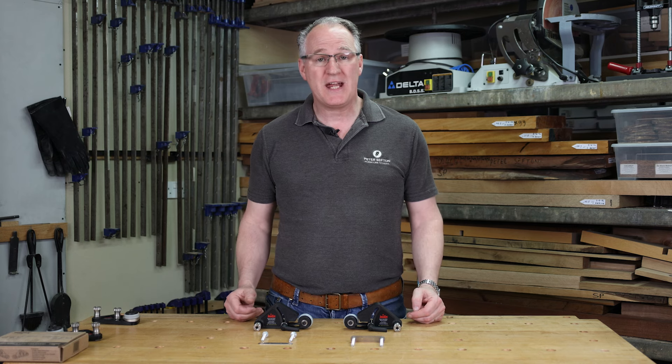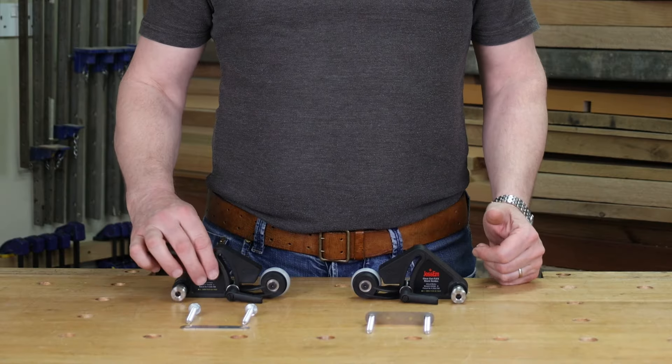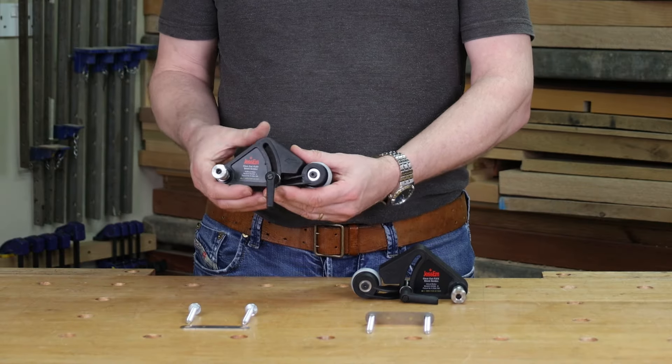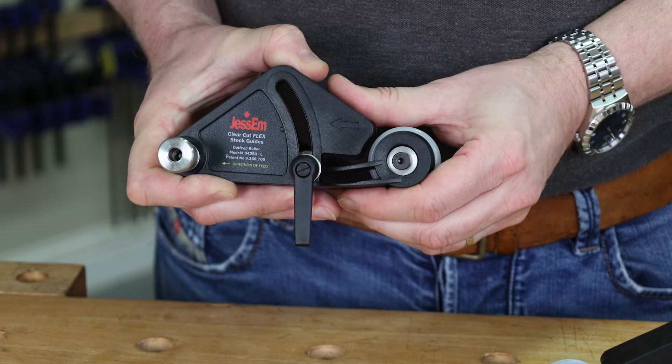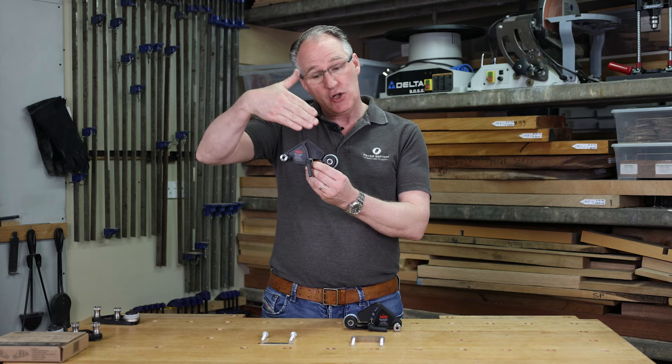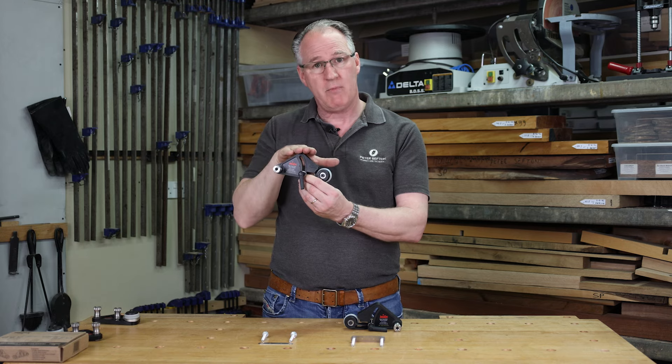What I have here is a pair of JessEm Clear-Cut Flex Stock Guides. The reason they're called flex is the composite body. The arm here has some physical flex into it. The idea with this is we can actually exert more downward pressure when pushing this onto our timber.